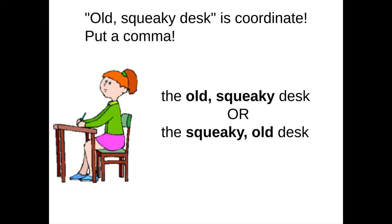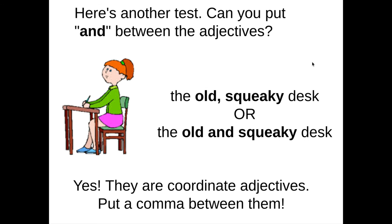Let's look at another one. She sits in the old squeaky desk. I could say 'the old squeaky desk,' or I could say 'the squeaky old desk' — it makes no difference. Those two adjectives are describing the desk equally, so I put a comma between them because they are coordinate. There's another test you can also do: try sticking the word 'and' in between the two adjectives to see if that makes sense. 'She sits in the old and squeaky desk.' It makes sense. If it passes those tests, put a comma between the adjectives because they're coordinate.